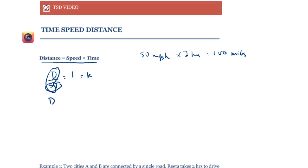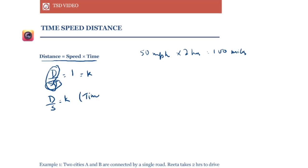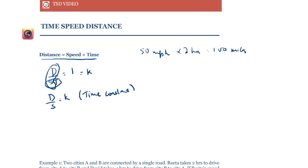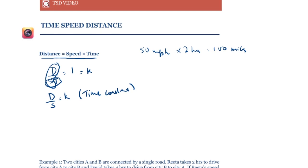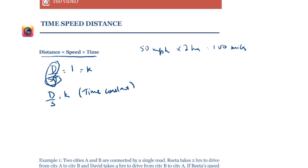So d/s equals a constant when time is constant. Think about it: if you and I travel for the same time and your speed is twice mine, then the distance you cover will also be twice mine.